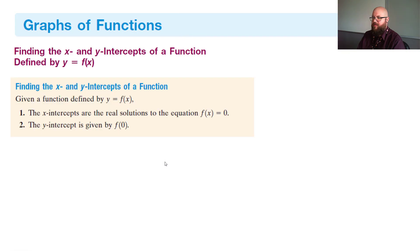So graphs of functions. So we need to find the x and y intercepts of the function defined by y = f(x). So with this, we've got x intercepts are the real solutions to the equation. So we want to make f(x) = 0. So in other words, your y is equal to 0.